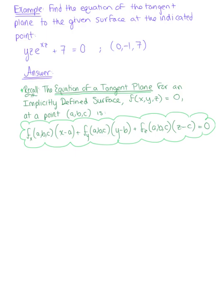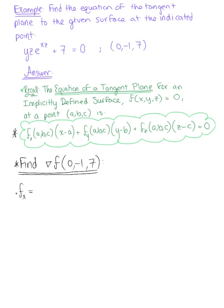Looking at this equation for our tangent plane, we notice that the first thing we need to do is find the gradient at the point (0, minus 1, 7). That's going to be the normal vector to this surface at this point. So the first thing we need to do is find the partial derivatives.